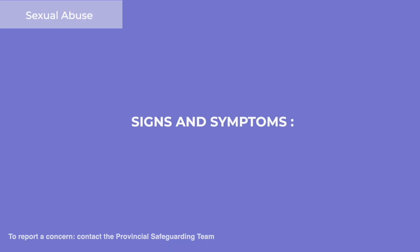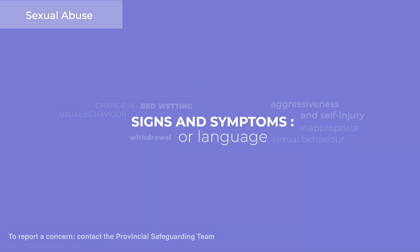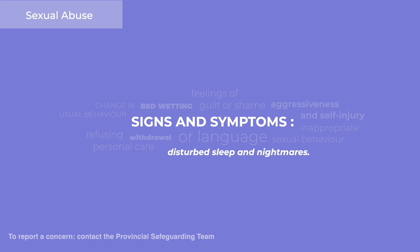Signs and symptoms of sexual abuse can include change in usual behaviour such as withdrawal, bed wetting, aggressiveness and self-injury, inappropriate sexual behaviour or language, feelings of guilt or shame, refusing personal care, disturbed sleep and nightmares.